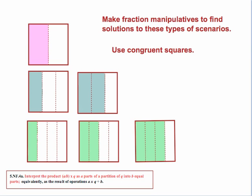It might be difficult for students to do all those subdivisions, especially getting them into equal parts. So here's something to make it simpler: you can make fraction manipulatives using clear plastic sheets. Make congruent squares—all your squares need to be the same size. You need one for 1 half, a set for thirds showing 1 third and 2 thirds, a set for fourths showing 1 fourth, 2 fourths, and 3 fourths, and continue making sets for fifths, sixths, sevenths, and so forth, probably up to about tenths.